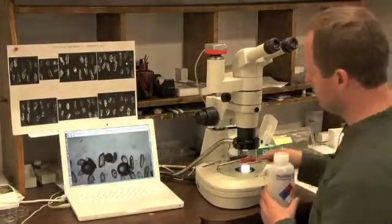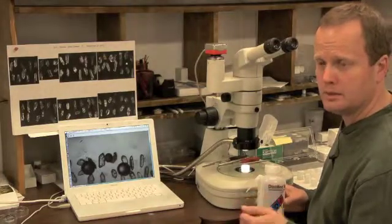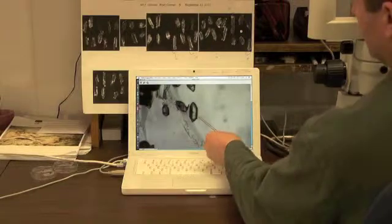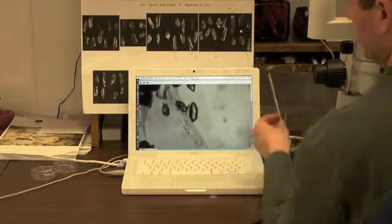To begin, I'm going to put a small amount of water on the surface of the mount. That helps to keep the zircons in place as we lever them out of the epoxy. I'm now going to extract this zircon crystal, which has a very simple cathodoluminescence pattern.